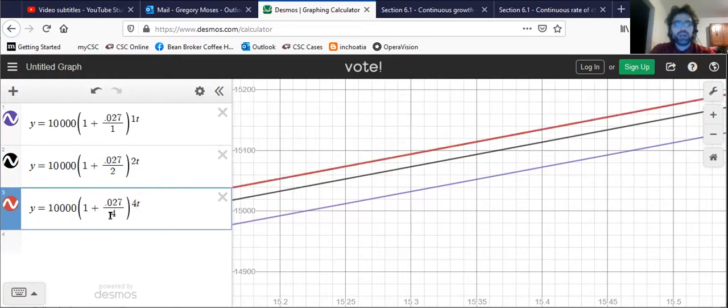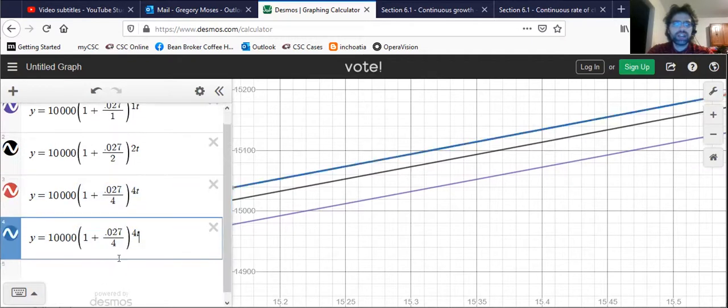If we compound quarterly, the graph bumps up again, that increases the value of the investment.